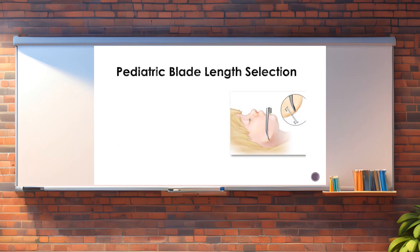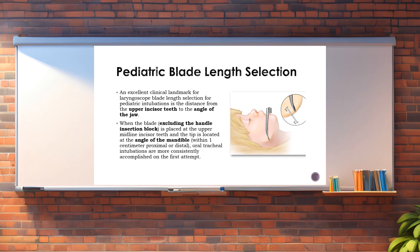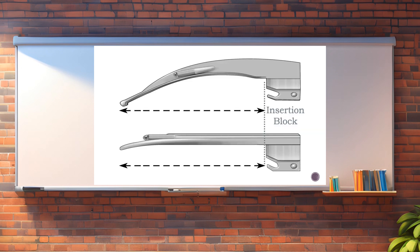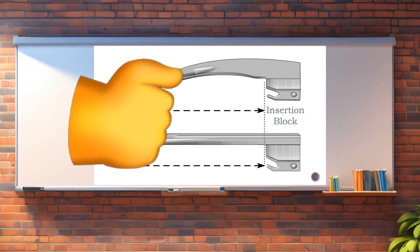Pediatric blade length selection. An excellent clinical landmark for laryngoscope blade length selection for pediatric intubations is the distance from the upper incisor teeth to the angle of the jaw. When the blade — excluding the handle insertion block — is placed at the upper midline incisor teeth and the tip is located at the angle of the mandible within 1 cm proximal or distal, oral tracheal intubations are more consistently accomplished on the first attempt. Please note the insertion blocks of the blades — this portion is not included in the measurement.